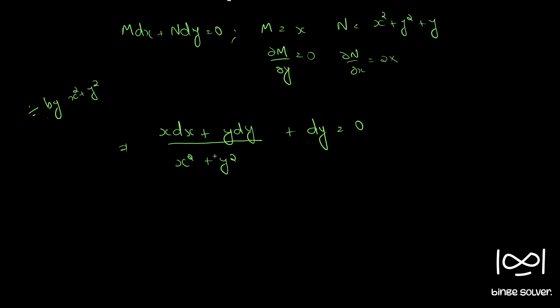Now, this is integrable. So, the numerator is half of 2. This is, if you take half into 2x dx plus 2y dy by x square plus y square,